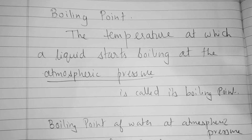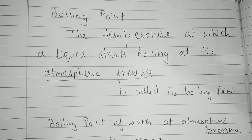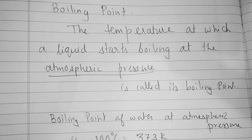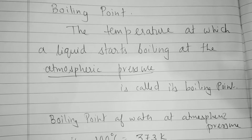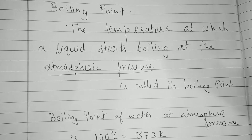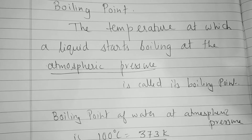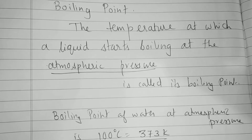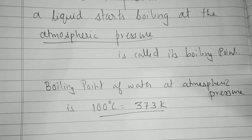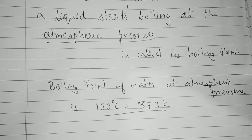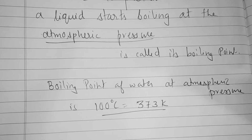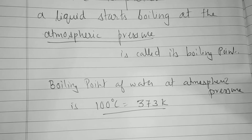Boiling point is defined as the temperature at which a liquid starts boiling at atmospheric pressure. I've underlined atmospheric pressure because with increase in pressure, the boiling point changes — it increases actually. The boiling point of water at atmospheric pressure is 100 degrees centigrade, which is equal to 373 Kelvin. Kelvin is the SI unit of temperature.